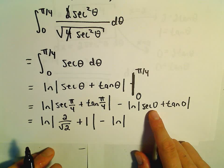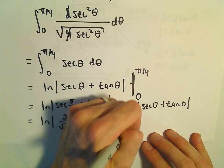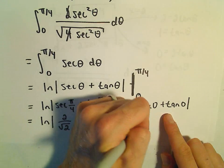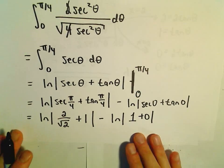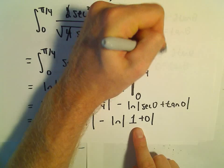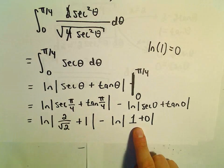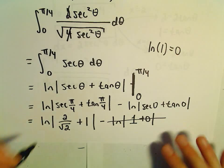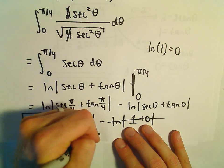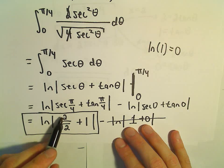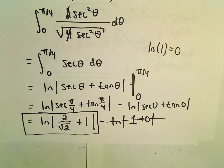Sec(0) = 1/cos(0) = 1, and tan(0) = 0, so we have ln|1 + 0| = ln(1) = 0. We can ignore this term. Our final solution is ln(2/√2 + 1).